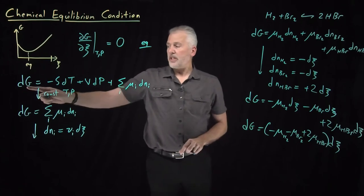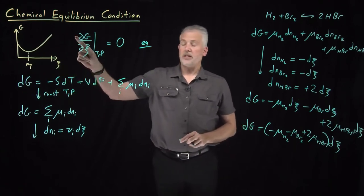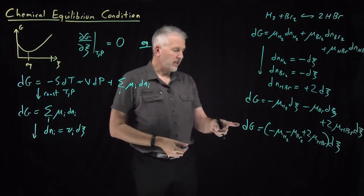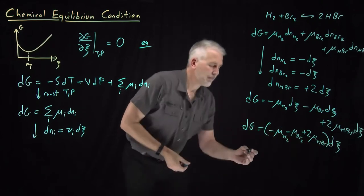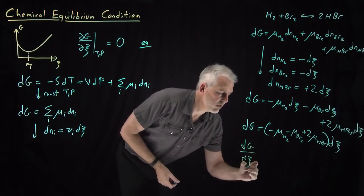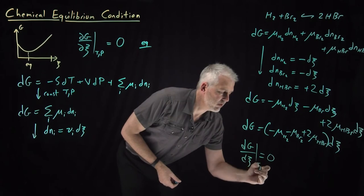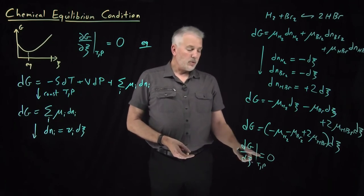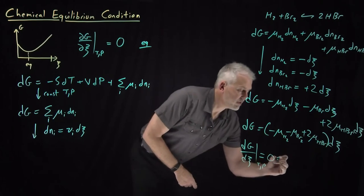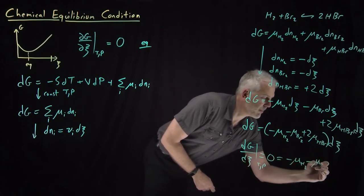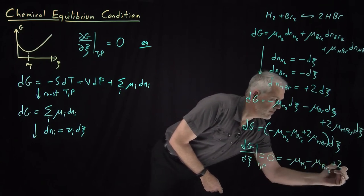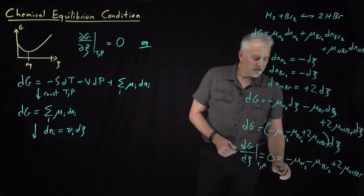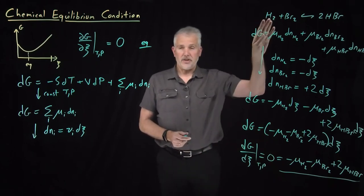Remember why we started talking about the change in Gibbs free energy — at equilibrium, dG/dξ = 0. So I can take that derivative. Dividing dG by dξ at constant temperature and pressure, at equilibrium dG/dξ equals zero. That derivative is: dG/dξ = -μ(H₂) - μ(Br₂) + 2·μ(HBr) = 0. That's what the equilibrium condition looks like for the H₂ + Br₂ reaction.